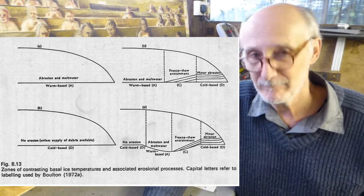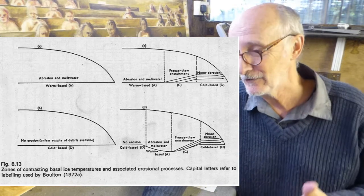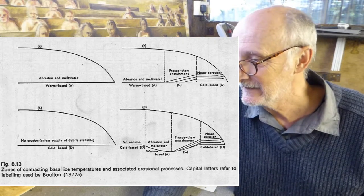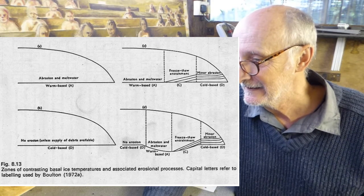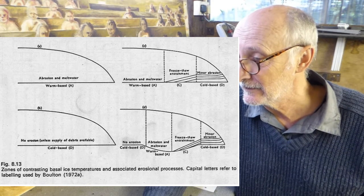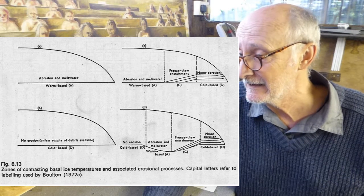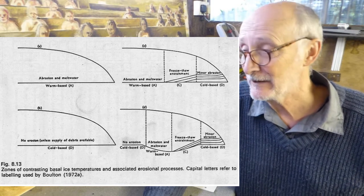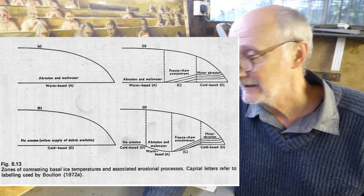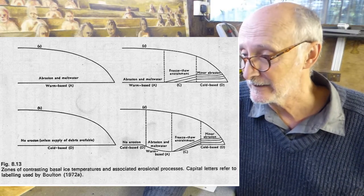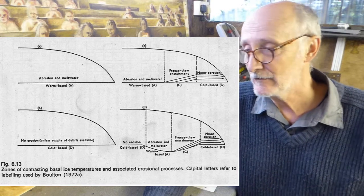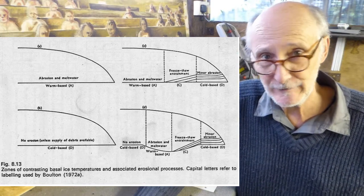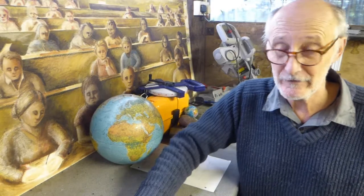In the bottom right hand corner, he's identifying a zone of no erosion in the cold-based ice, then zones of abrasion and meltwater with the warm-based ice, followed by a zone of entrainment before we reach the cold-based margin. So it's a very close association between thermal regime and geomorphic processes. This is something we're going to be moving on to very soon as we move forward in this module.